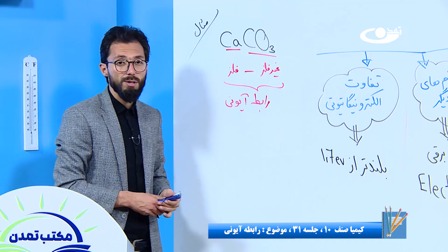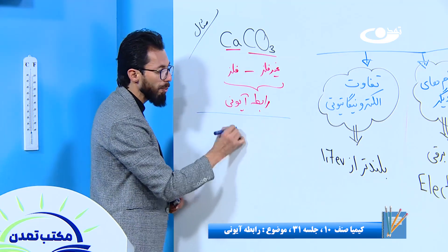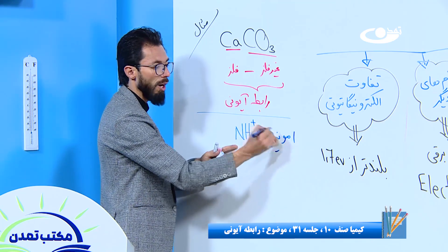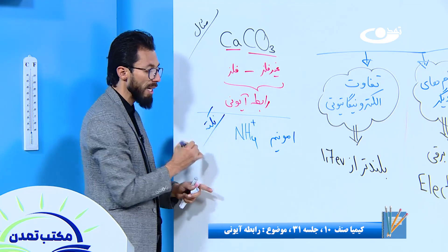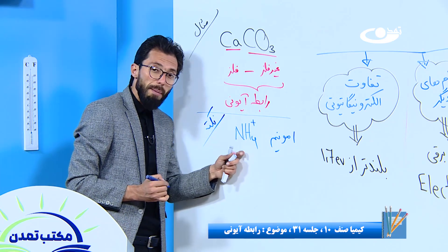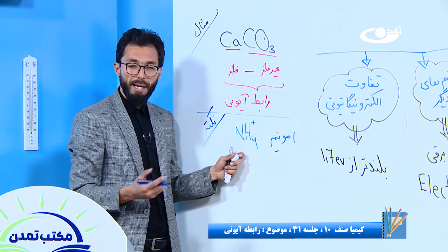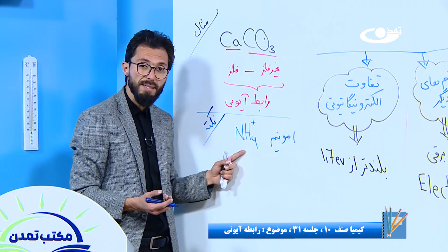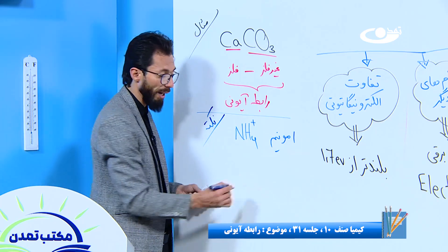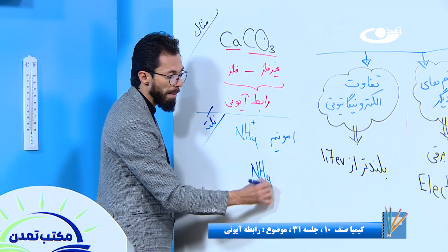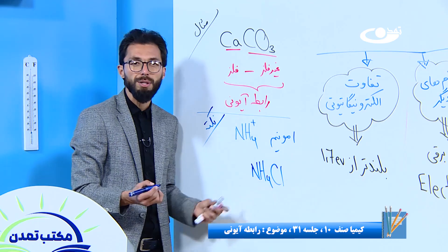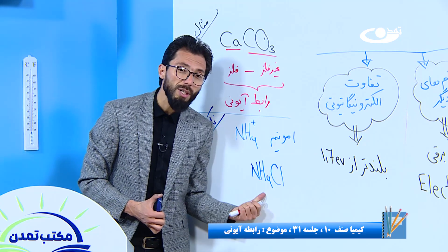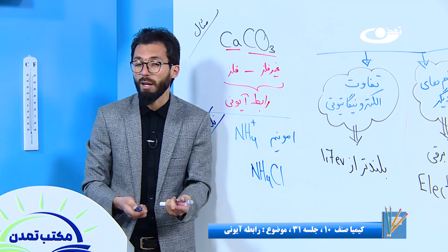یک استثناء وجود داره: در مرکب امونیم (NH4). امونیم یک کتیون غیر فلزی است اما یک استثناء است. اگر امونیم همراه یک آیون منفی دیگر آمده باشد، باز رابطه آیونی است. به طور مثال امونیم کلوراید رابطه آیونی دارد و مرکب آیونی است.